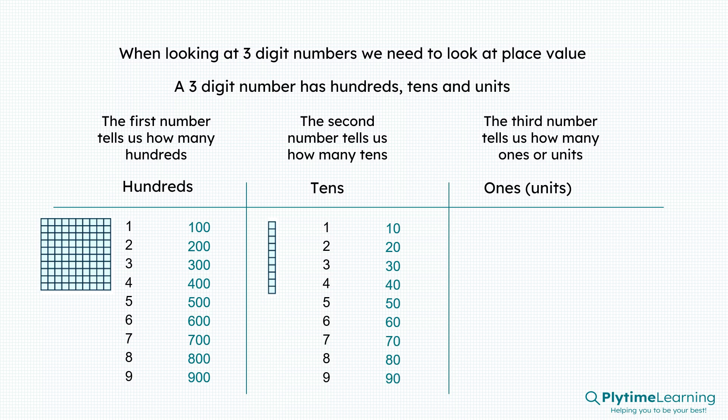The third number tells us how many ones or units we have. They look like this. We'd have 1, 2, 3, 4, 5, 6, 7, 8, or 9.